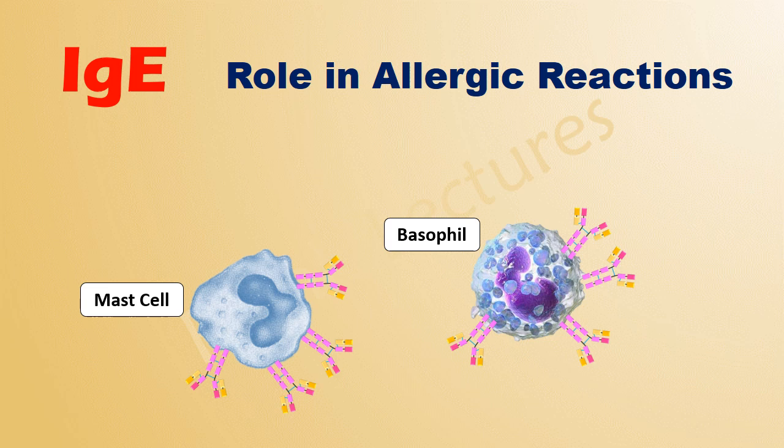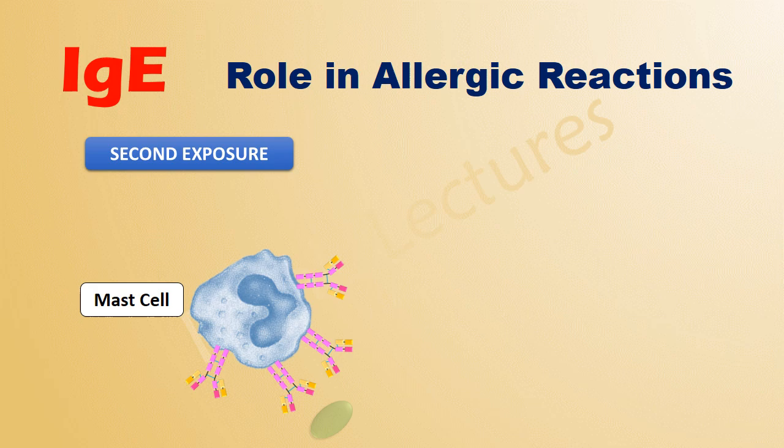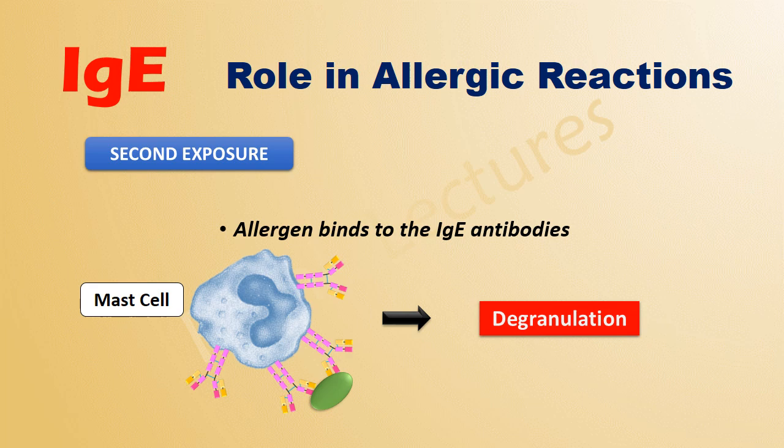Now the antigen binding sites of these IgE antibodies are free. When there is a second exposure to the allergen, the allergen binds to these antigen binding sites of IgE antibodies. This binding results in the cross-linking of IgE antibodies, and this cross-linking sends a signal to the cell and results in degranulation.